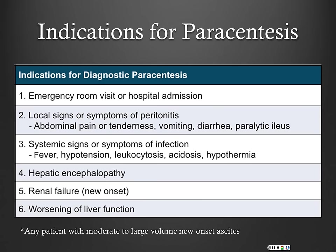So, how do we diagnose a patient with cirrhotic ascites? Regarding indications for diagnostic paracentesis — assuming the patient already has cirrhosis — any patient with cirrhosis that comes into the emergency room or the hospital automatically has earned themselves a paracentesis.